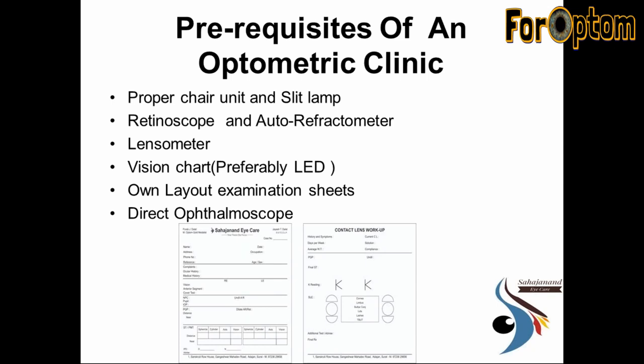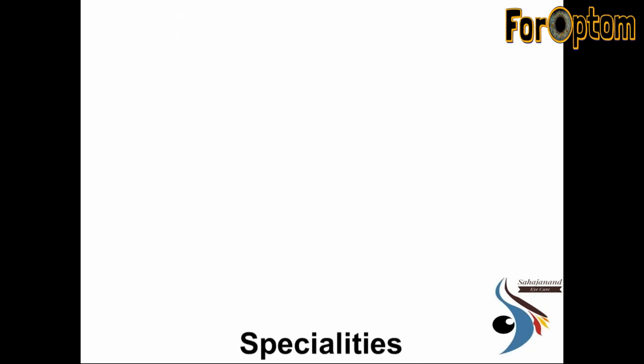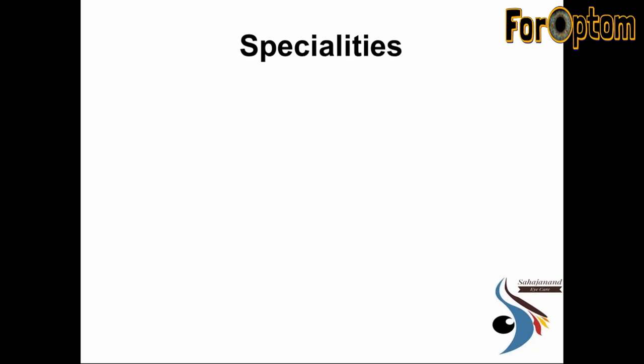Students usually forget to perform direct ophthalmoscopy on patients. The cup-to-disc ratio is very easy to locate with a direct ophthalmoscope and doesn't require pupil dilation. Direct ophthalmoscopy is very helpful — if you see any underlying glaucoma complications or retinal pathologies, you can report them right then.